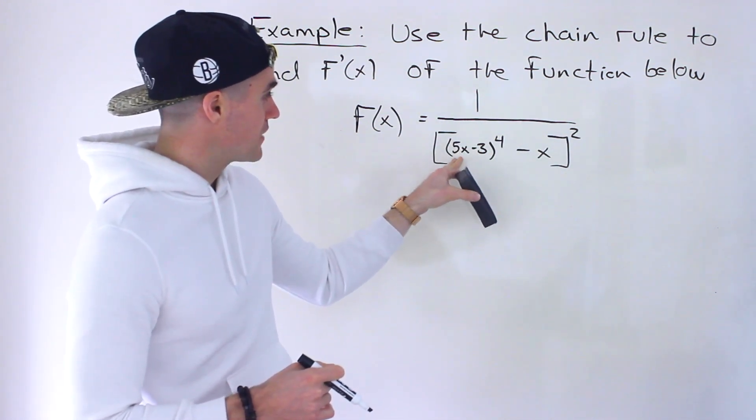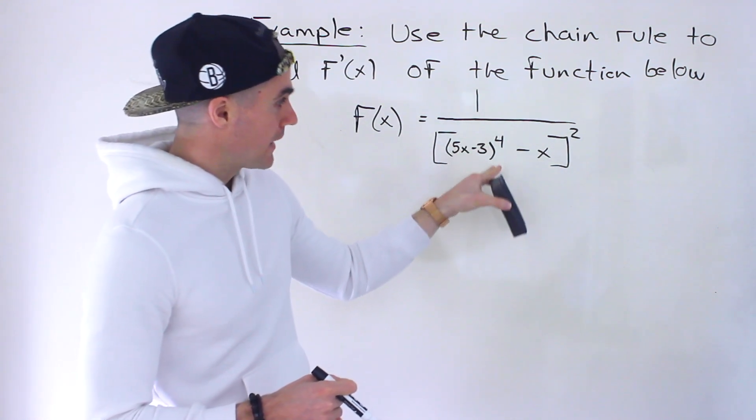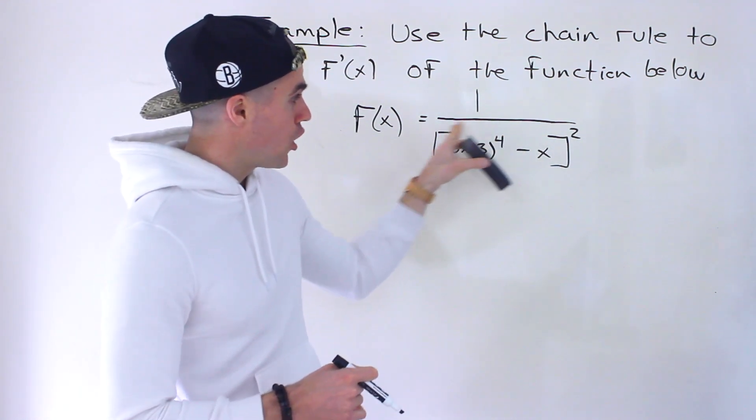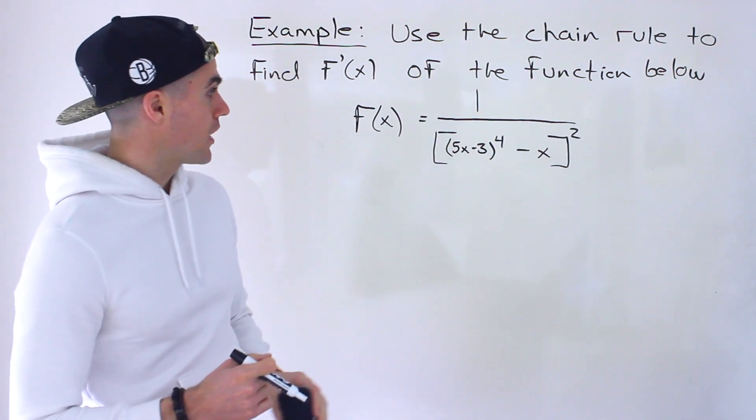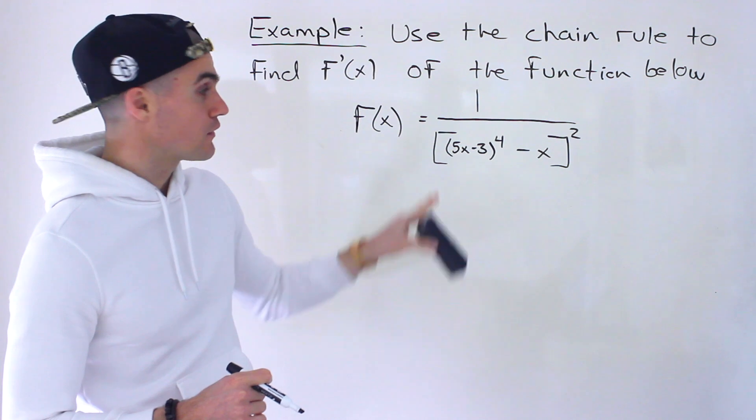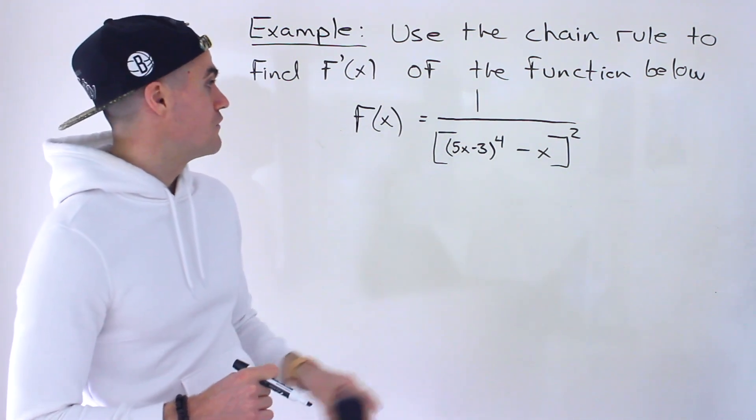So we have (5x - 3) in brackets to the power of 4 minus x, and then all of that is to the power of 2. That large square bracket is to the power of 2. So we've got to find the derivative of that right there.